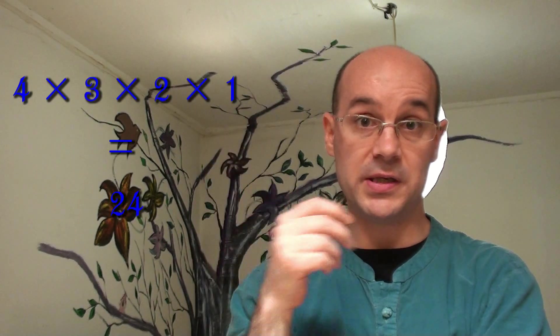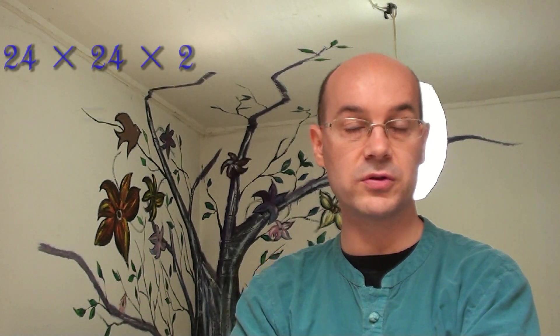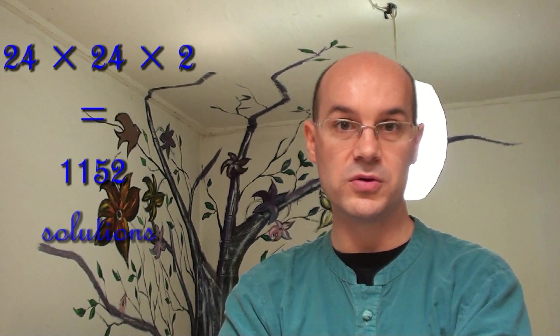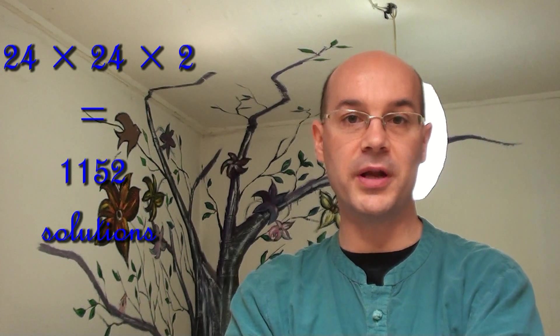And for the suits, it's the same story because you can put diamond, clubs, spades, or hearts. That makes four possibilities for the first card, three for the second, and two for the third. So all in all, it's 24 possibilities for the values multiplied by 24 possibilities for the suits. And last but not least, when you finish step one, you have the choice between two arrangements for the corners. So those 24 by 24 also have to be multiplied by two — that makes a little bit more than 1,000 possibilities.